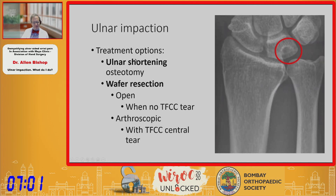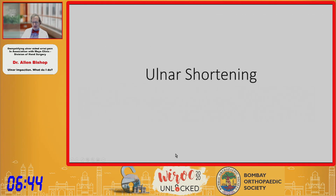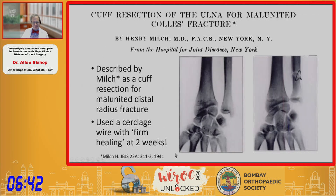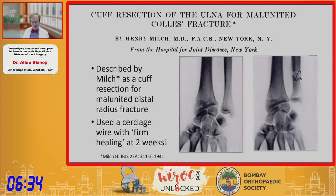For pure ulnar impaction, you basically have two common options: shortening or wafer resection. Wafer resections can be done open if there is no TFCC tear in particular, and in most cases where there's a central disc tear, you can do it arthroscopically. Ulnar shortening is kind of the gold standard; it was described by Milch back in 1941, and these are photos from his article of a case report.